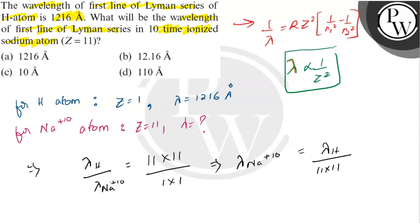Now, this is equal to lambda of H, 1216 Angstrom, divided by 121, which is approximately equal to 10 Angstrom.